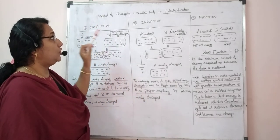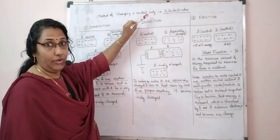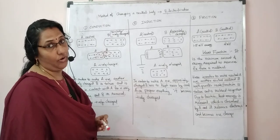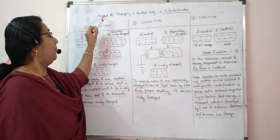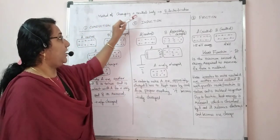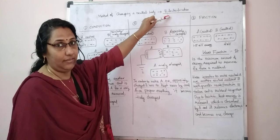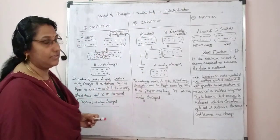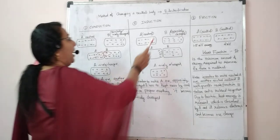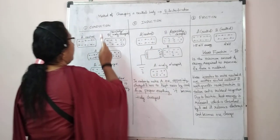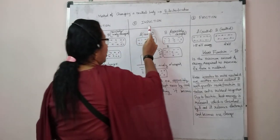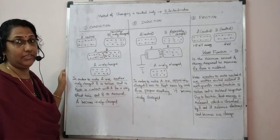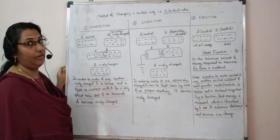We charge a neutral body by using another body — without another body, we cannot charge it. Electrification can be done in three different methods: electrification by conduction, electrification by induction, and electrification by friction.